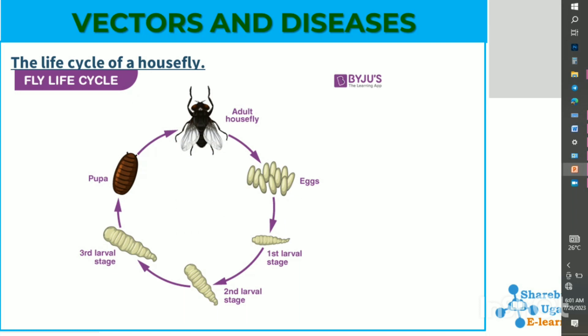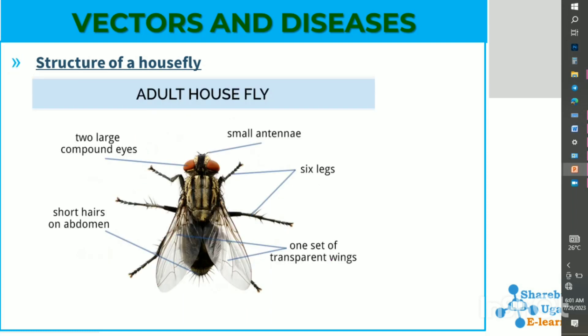The life cycle of a housefly is a complete metamorphosis, which includes eggs, then the larva stage. For a housefly, the larva stage has three parts: the first larva stage, the second larva stage, and the third larva stage, then to the pupa, and finally to the adult.